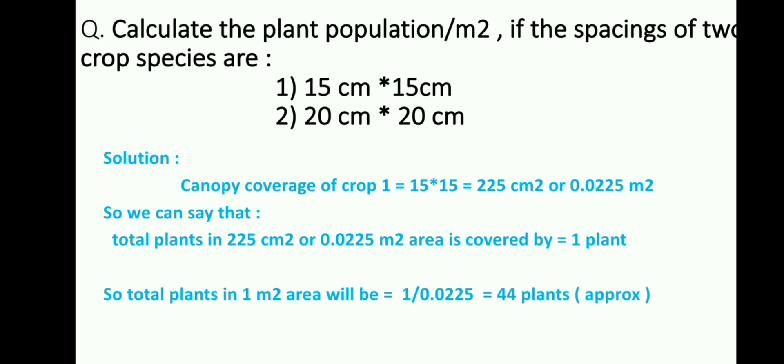For one meter square, we have to calculate the number of plant population as it asks the plant population per meter square. The total plants in one meter square area will be equal to 1 divided by 0.0225 meter square, which is equivalent to 44 plants approximately.